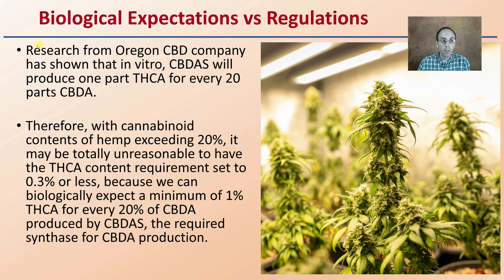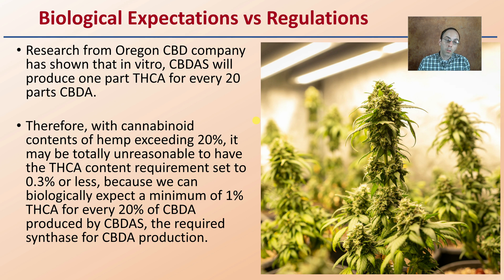Looking at biological expectations versus regulations: research from Oregon CBD company has shown that in vitro, CBDA synthase will produce one part THCA for every 20 parts of CBDA. With cannabinoid content of hemp exceeding 20%, it may be totally unreasonable to require THCA content at 0.3% or less, because we can biologically expect a minimum of 1% THCA for every 20% of CBDA produced by CBDA synthase. Setting the federal limit at 0.3% really limits the amount of cannabinoids that the plant can theoretically produce overall — the regulations and biological expectations of the plant don't really match up.